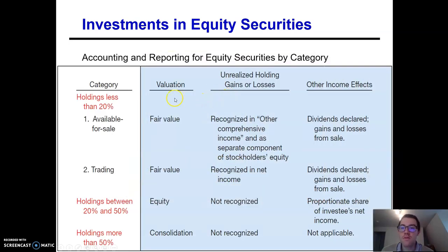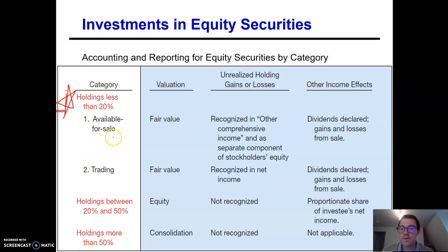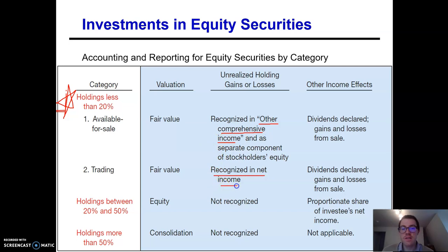Here's a nice chart. For equity, you can't hold to maturity — they don't mature. It's either available for sale or it's trading. For holdings less than 20%, you have those two categories — available for sale or trading — and either way we account for them using the fair value method. The unrealized holding gains or losses work the same as for debt securities: for available for sale, they go into other comprehensive income; if it's trading, those gains or losses are recognized in net income.